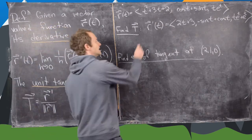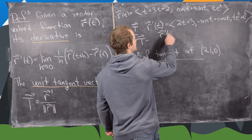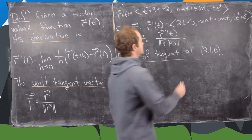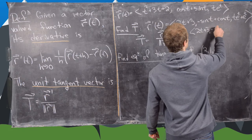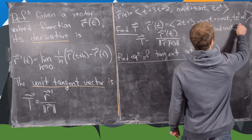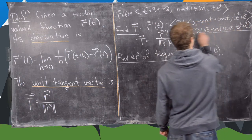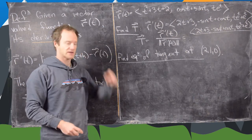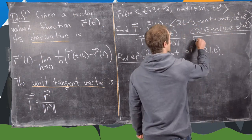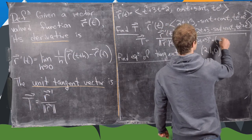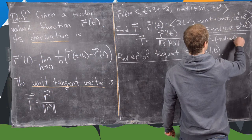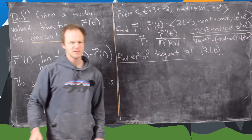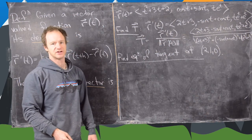So we have r prime of t, and now capital T is r prime of t divided by the magnitude of r prime of t. That will be the vector with entries 2t plus 3, minus sine t plus cosine t, and t e to the t plus e to the t, all over the magnitude of that vector. The magnitude is the square root of (2t+3) squared plus (minus sine t plus cosine t) squared plus (t e to the t plus e to the t) squared. That's what we get for the unit tangent vector, though it's quite messy to simplify.